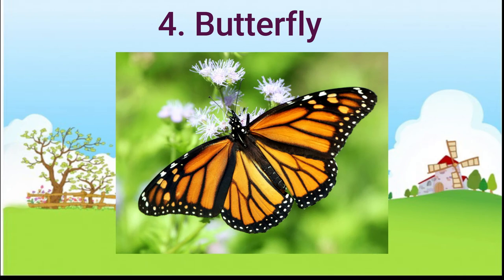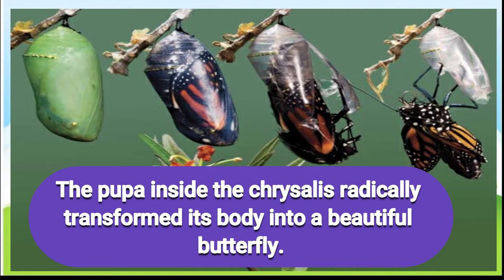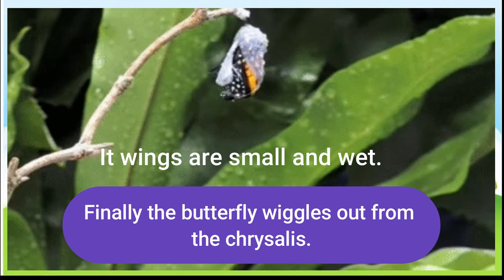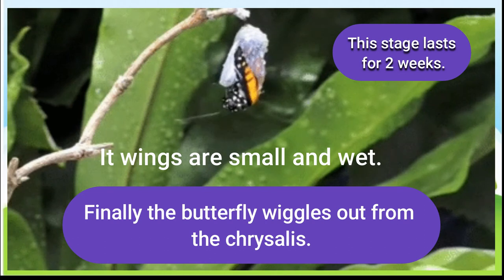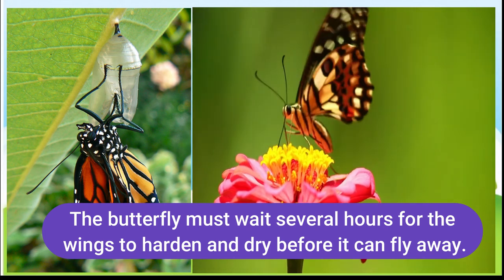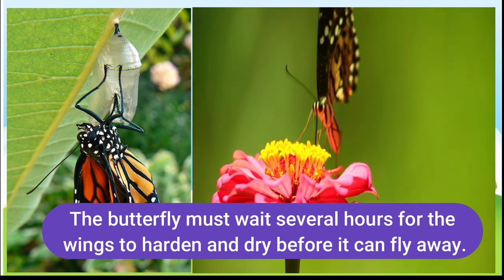The next stage is the adult butterfly. The pupa inside the chrysalis radically transforms its body into a beautiful butterfly, and finally the butterfly wiggles out from the chrysalis. The wings are small and wet at first. This stage lasts about two weeks or 15 days, and the butterfly must wait several hours for its wings to harden and dry before it can fly away.